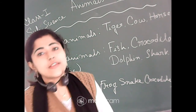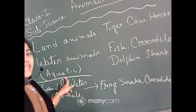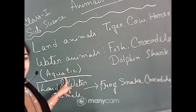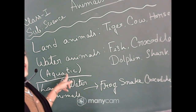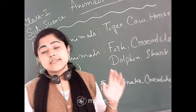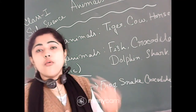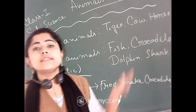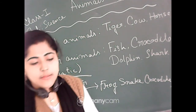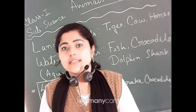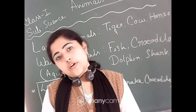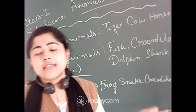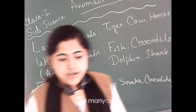Today I also told you one extra name — aquatic. A-Q-U-A-T-I-C. Aquatic animals are water animals. And some animals live in both land and water — remember their examples: snake, crocodile, and frog.